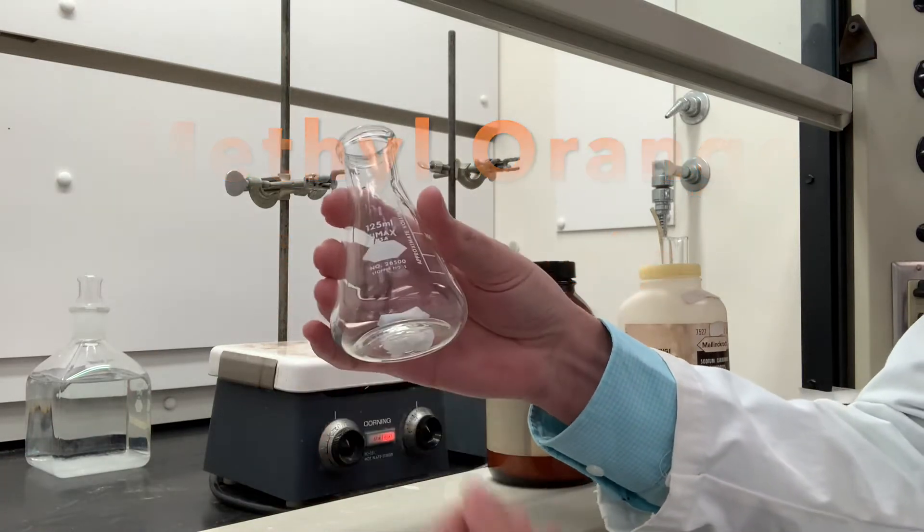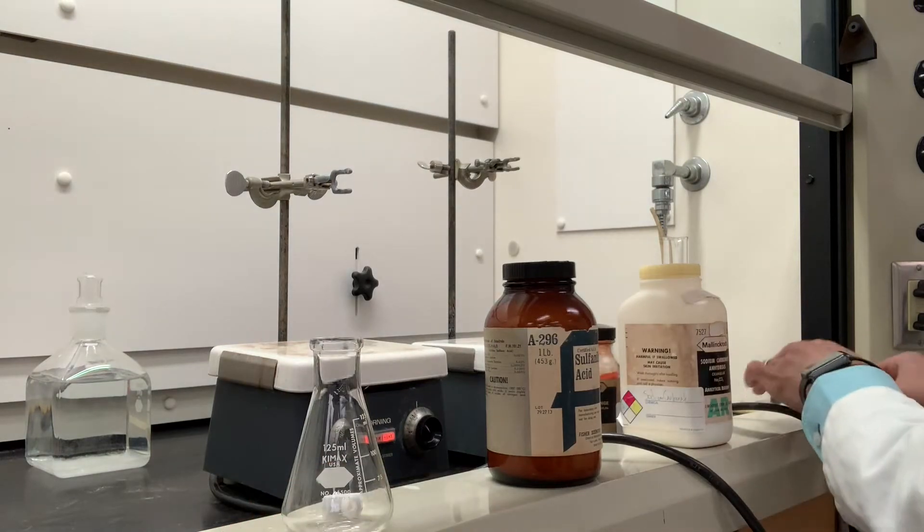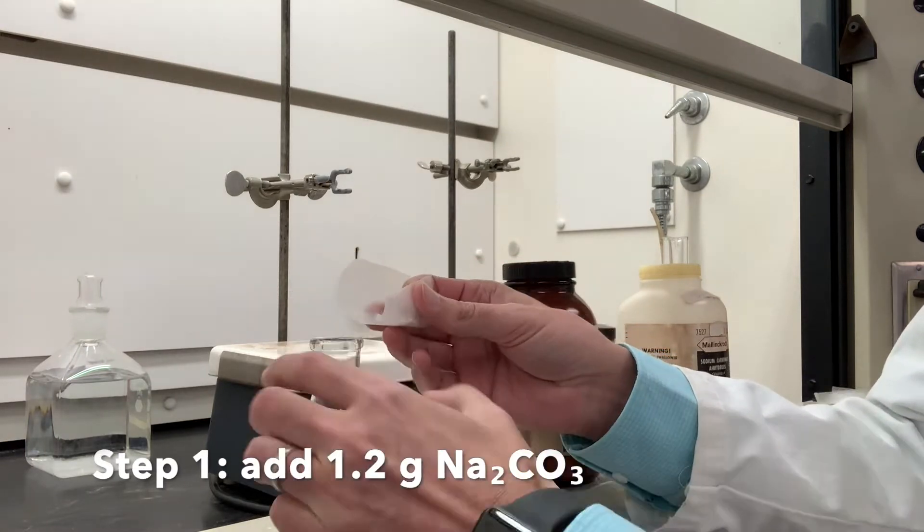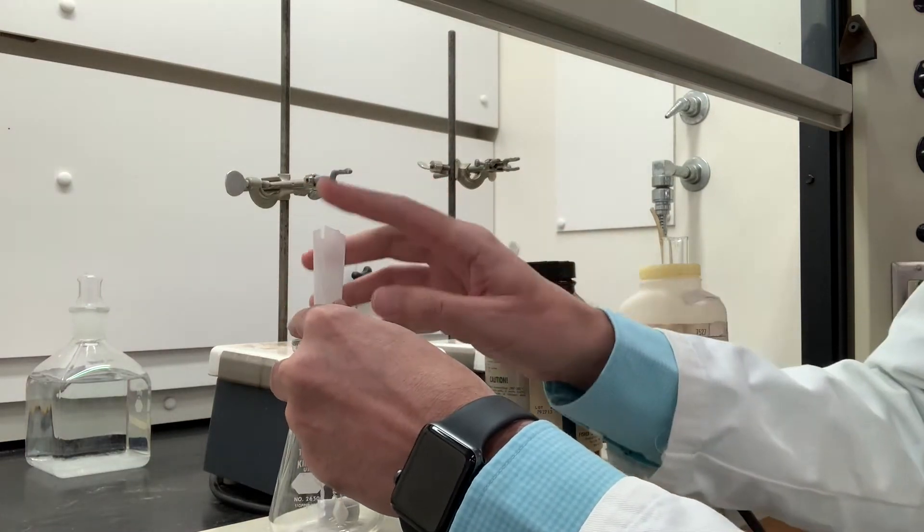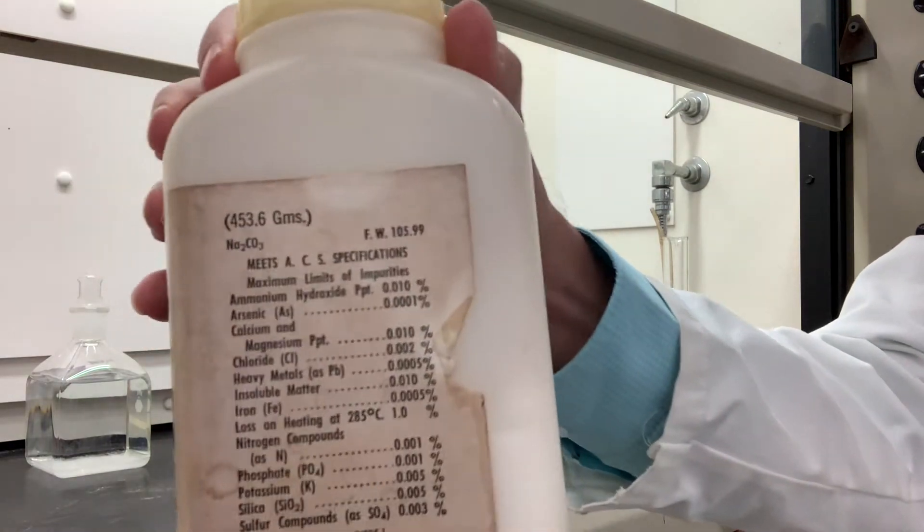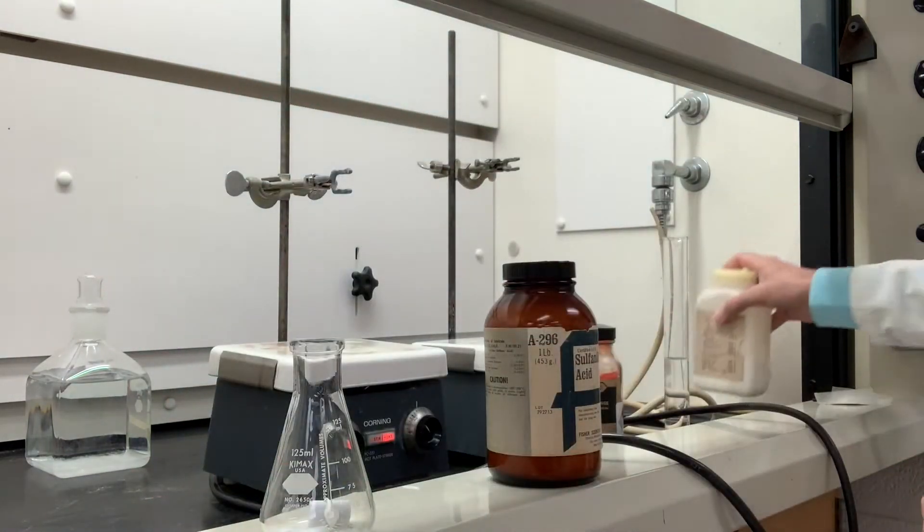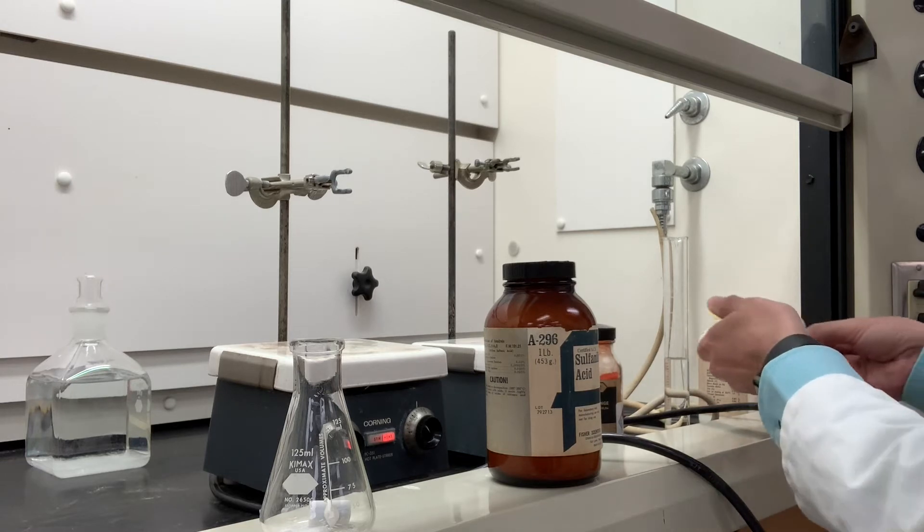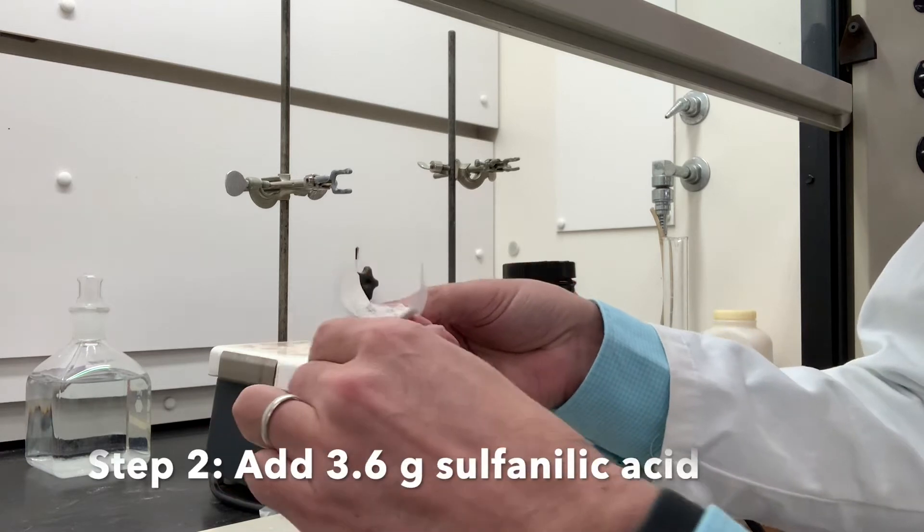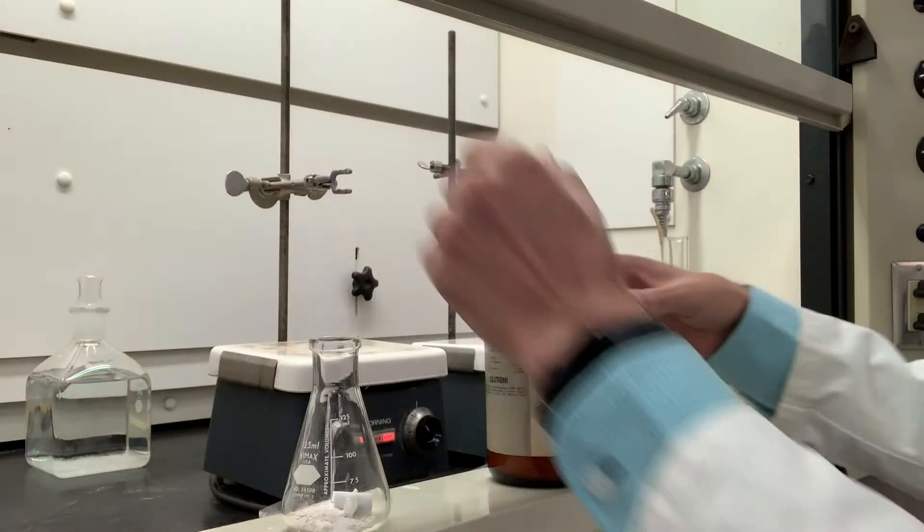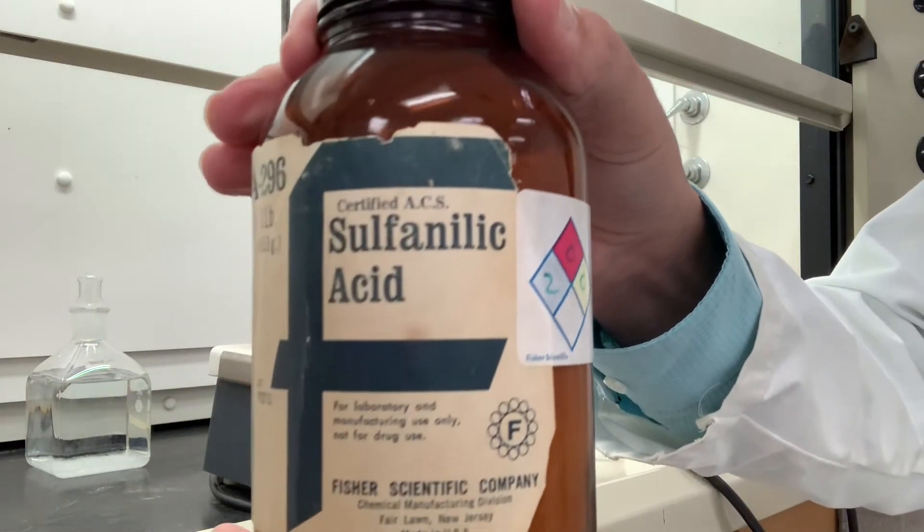We have a 125 milliliter flask here. We want to add sodium carbonate. Here's the information about the sodium carbonate. Next, we want to add 3.6 grams of sulfonylic acid. Here's the information for sulfonylic acid.